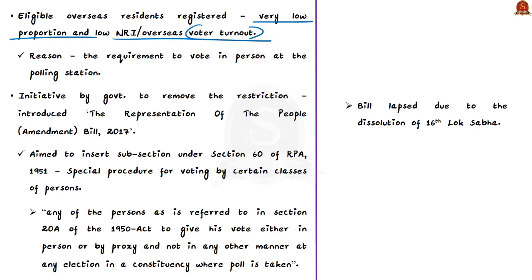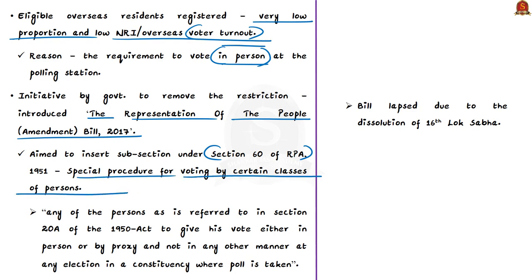The reason for low turnout was the requirement to vote in person at the polling station. To remove this restriction, the government introduced the Representation of the People Amendment Bill 2017, which aimed to insert a new provision in Section 60 of RPA 1951 — dealing with special procedure for voting by certain classes of persons. This subsection would have allowed proxy voting by non-resident Indians, where a person is appointed by a voter as their proxy to give the vote on their behalf and in their name.